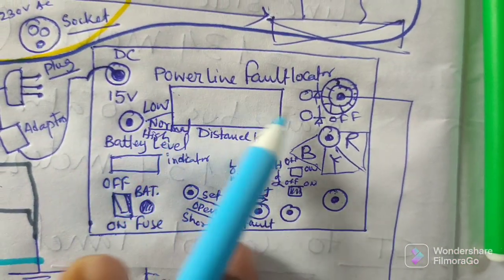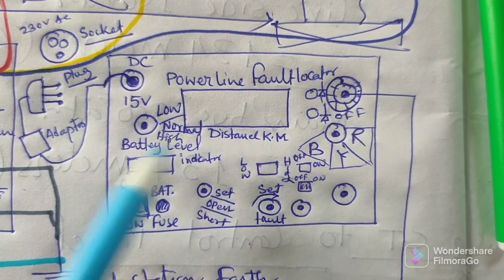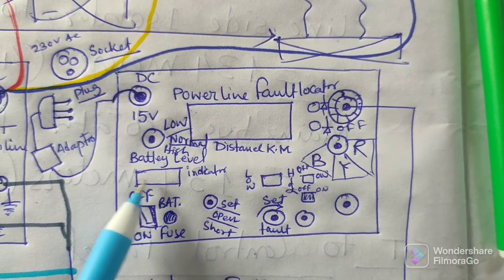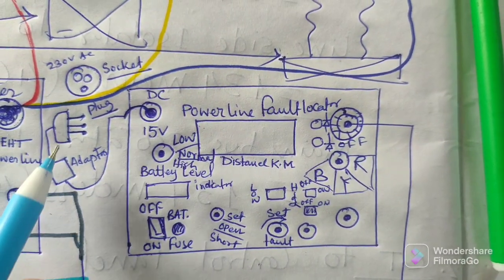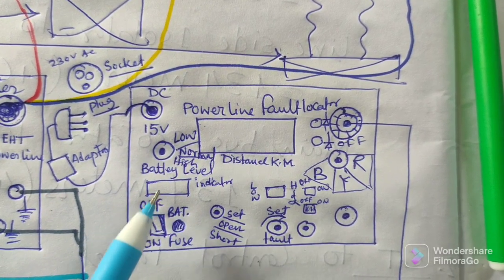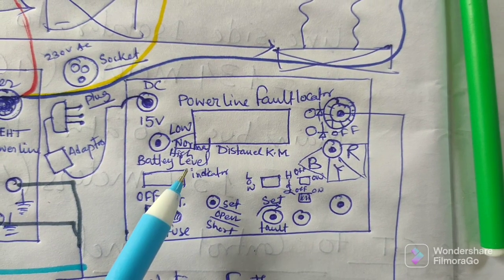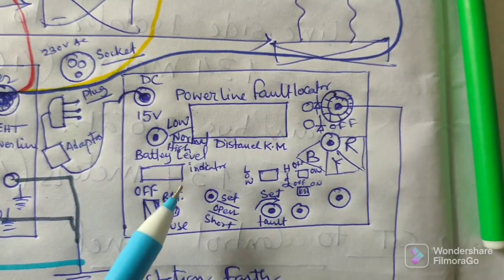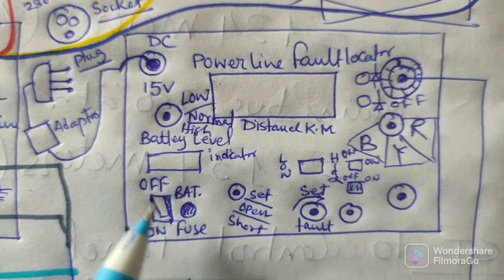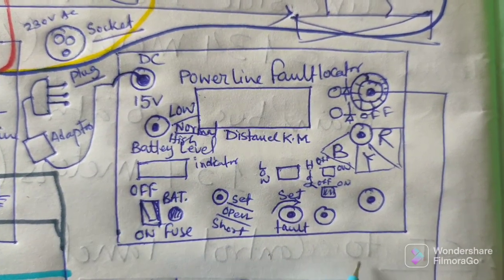This is the display where you will get information about where the exact fault has occurred — it gives the distance in kilometers. This is the 15-volt charger socket and the battery indicator showing the condition of the internal battery. If the battery condition is poor, plug in the socket for direct power. If the battery voltage is 13 or 14 volts DC, the machine will function properly. Before testing, ensure the battery condition is good because a good battery is required for accurate fault location. This is the on/off switch, and after switching on, one light blinks to confirm the machine is on.